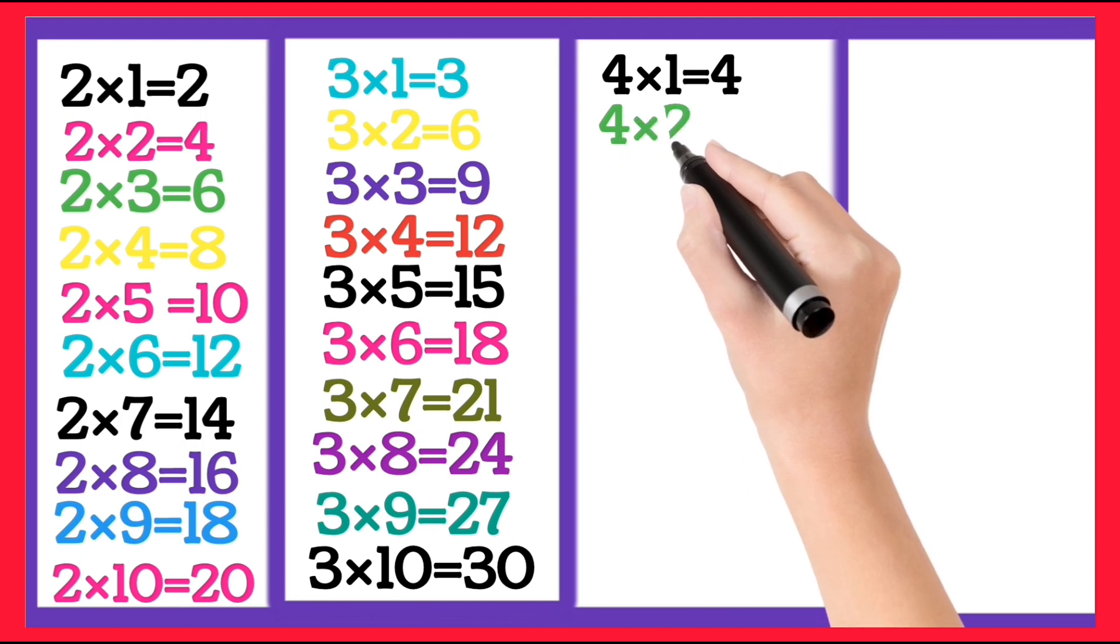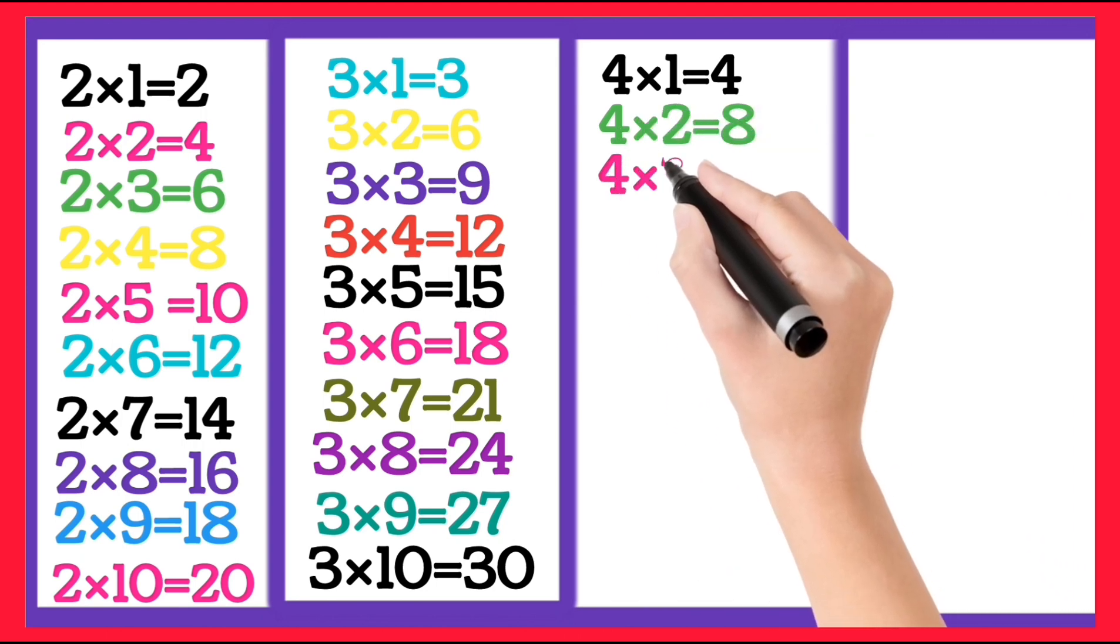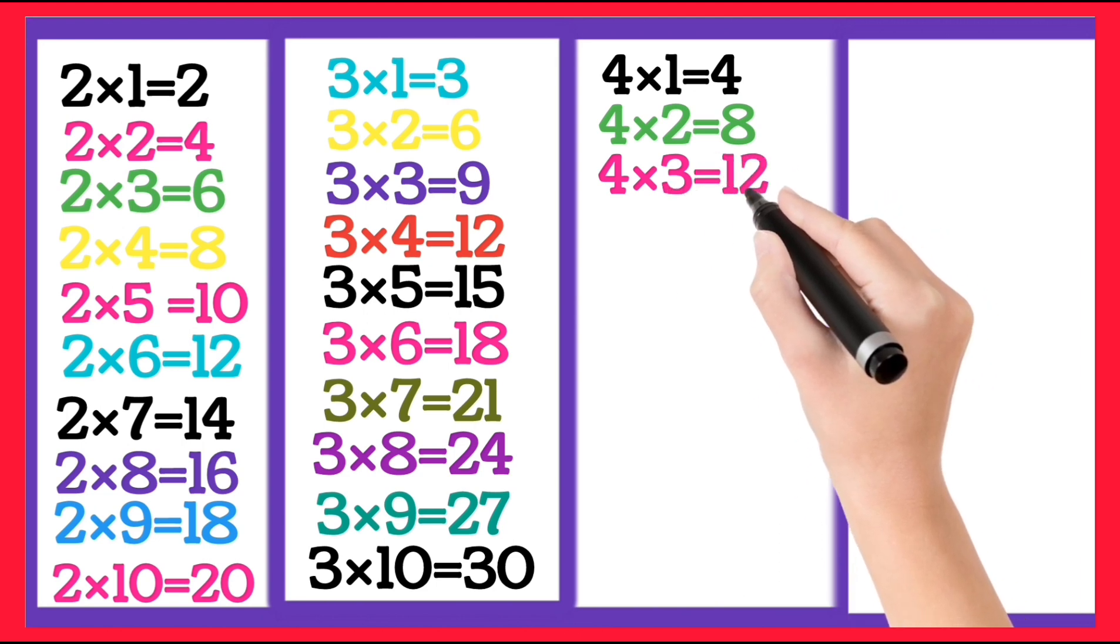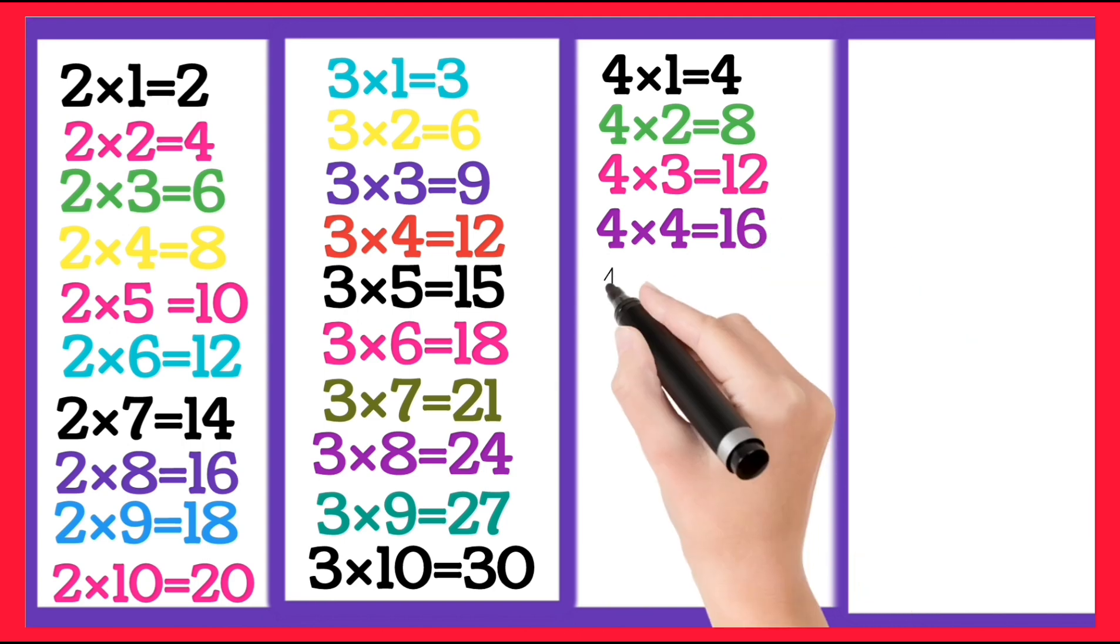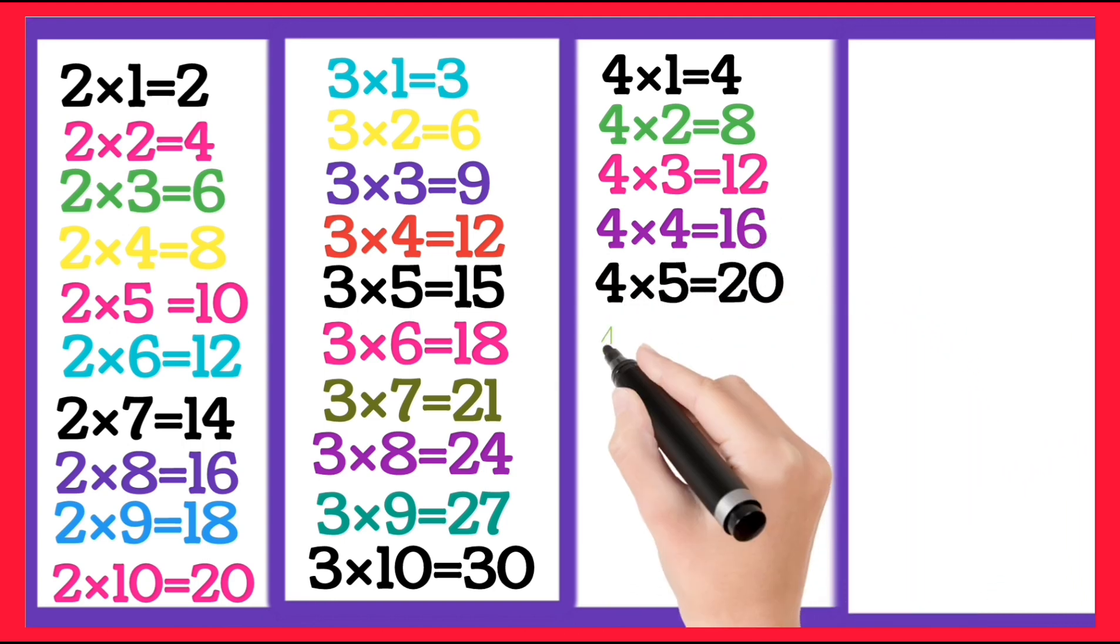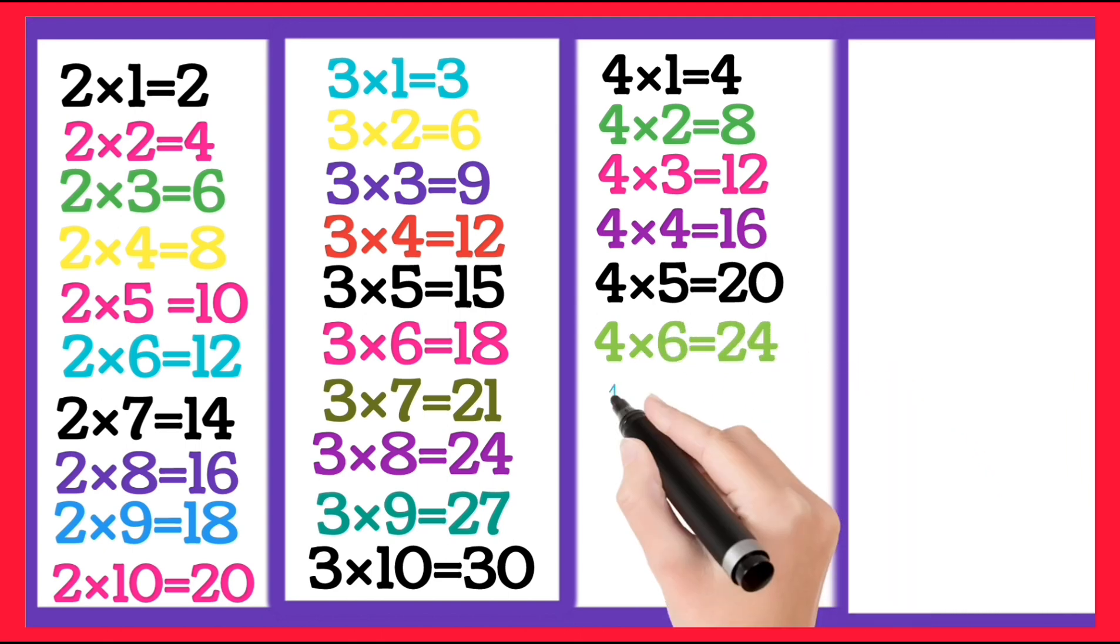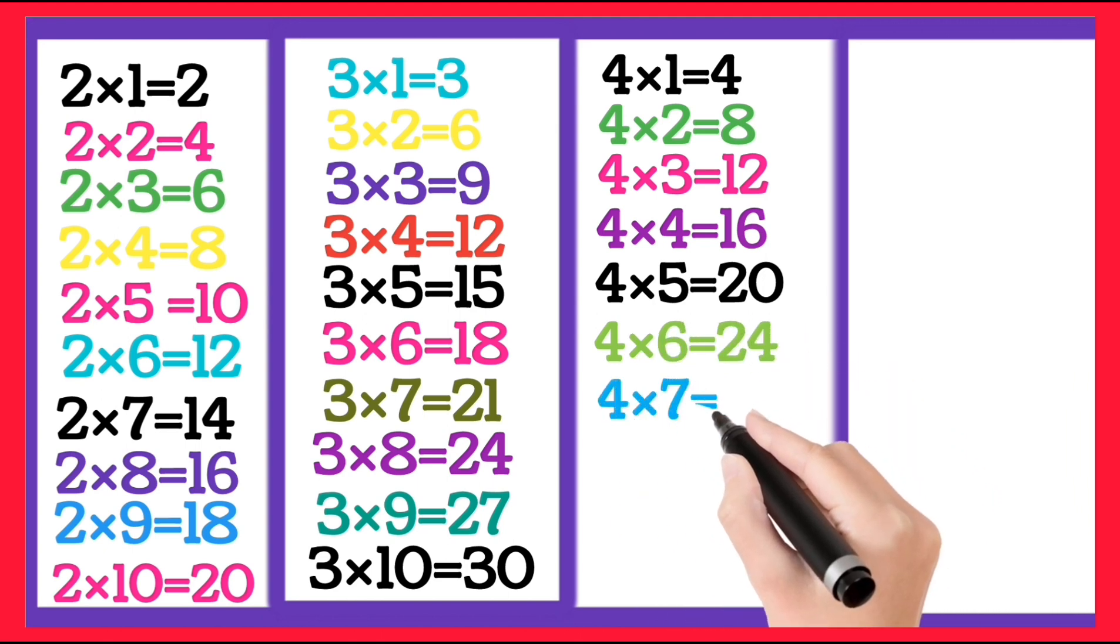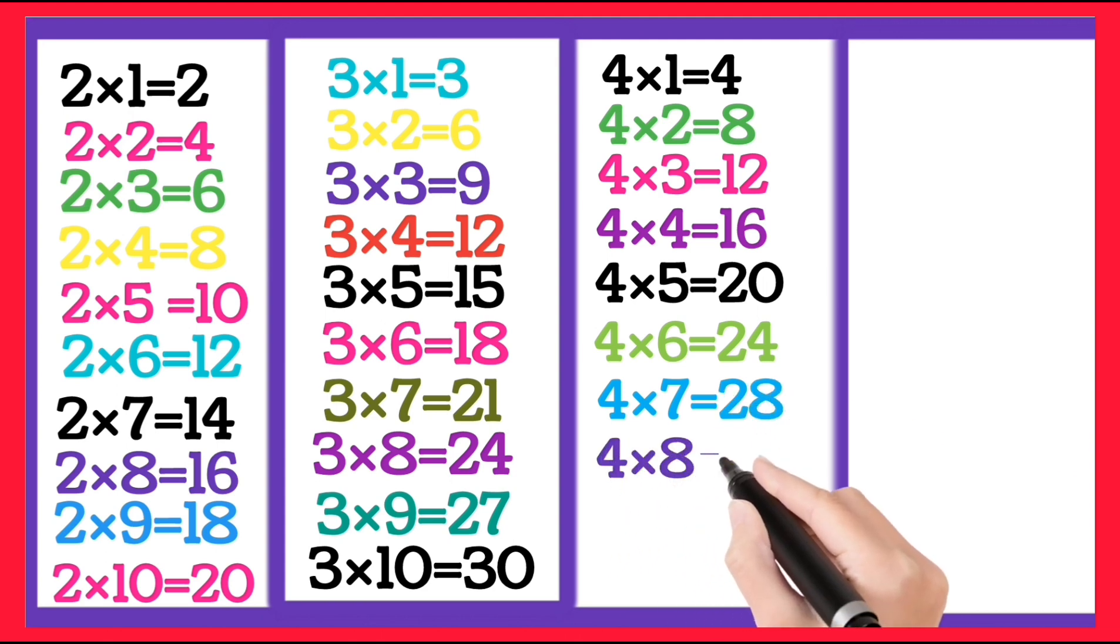4 1's are 4, 4 2's are 8, 4 3's are 12, 4 4's are 16, 4 5's are 20, 4 6's are 24, 4 7's are 28.